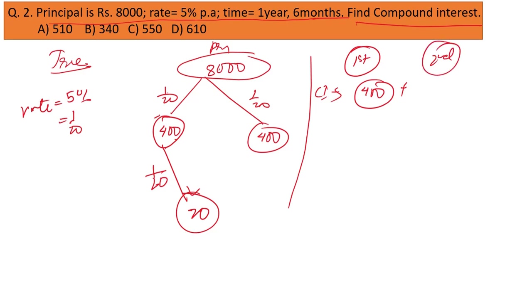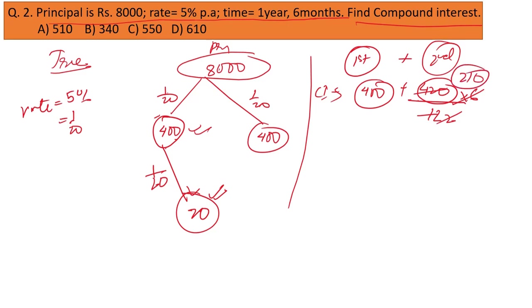The compound interest for the first year is 400. For the second year, the compound interest is 400 + 20 = 420. But the question asks for 1 year and 6 months, not 2 years. So the second-year interest of 420 is divided into 12 monthly parts and multiplied by 6, giving 210. Therefore, the compound interest for 1 year 6 months is 400 + 210 = 610. Option D is the correct answer.